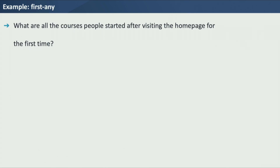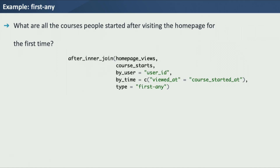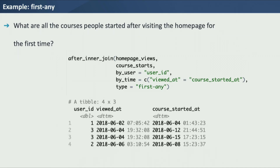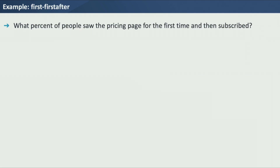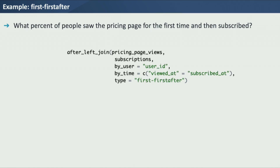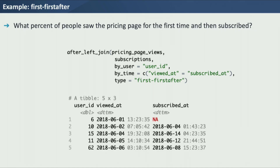One example is a first-any question: what are all the courses people started after visiting the home page for the first time? I write an AfterInnerJoin, specifying type as 'first-any,' then my time columns and user columns. The resulting table shows course_started_at is always greater than viewed_at. Person three viewed the home page on June 6, and we have two entries for them — even for the same home page view — because they started two different courses. That's because I did a first-any join. If I wanted to ask what percent of people saw the pricing page for the first time and then subscribed, I just change the type to 'first-first-after.'